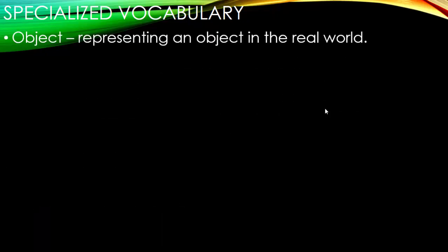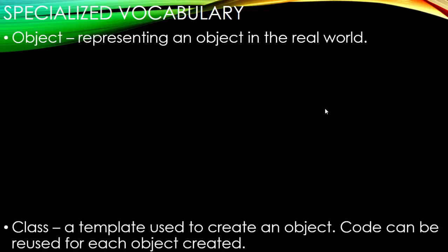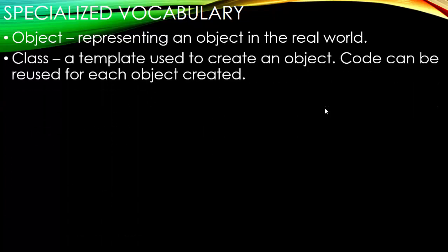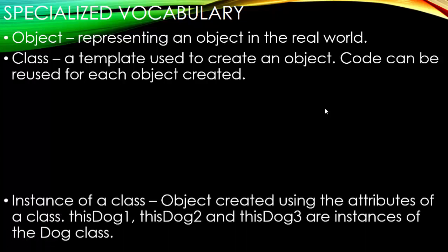So there's some specialized vocabulary you will see when you're using object-oriented programming. The first one is going to be object. And remember, an object is representing an object in the real world. You'll also hear the term class. It's a template used to create an object. Code can be reused for each object created. You're not having to write new code.